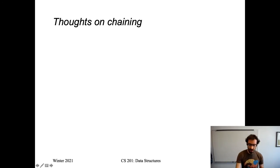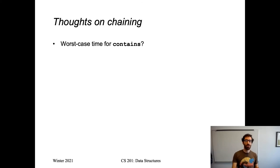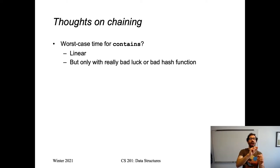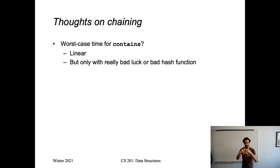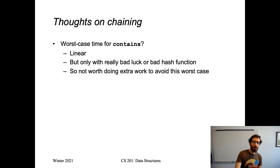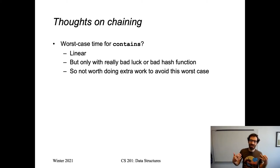Let's reflect on this separate chaining strategy. The worst-case time for a contains operation is going to be linear, because if we get really unlucky or have a bad hash function that returns the same integer for many different keys, we could end up with all of our keys at the same index, with just one long linked list. We know that contains on a linked list is linear. But this is either really bad luck or a very bad hash function, so we don't really want to do extra work to avoid this worst case — it's not really the hash table's fault.